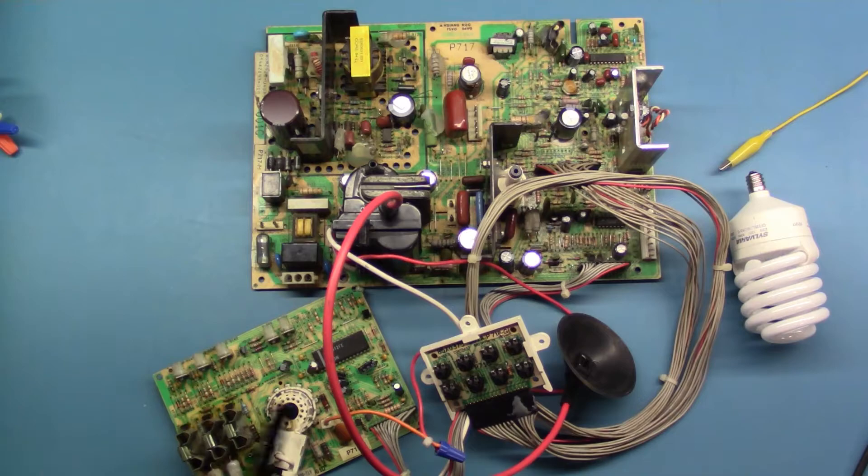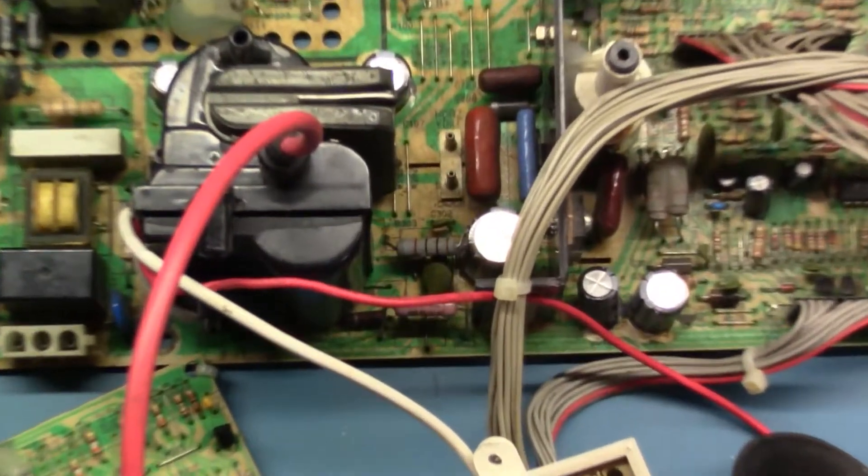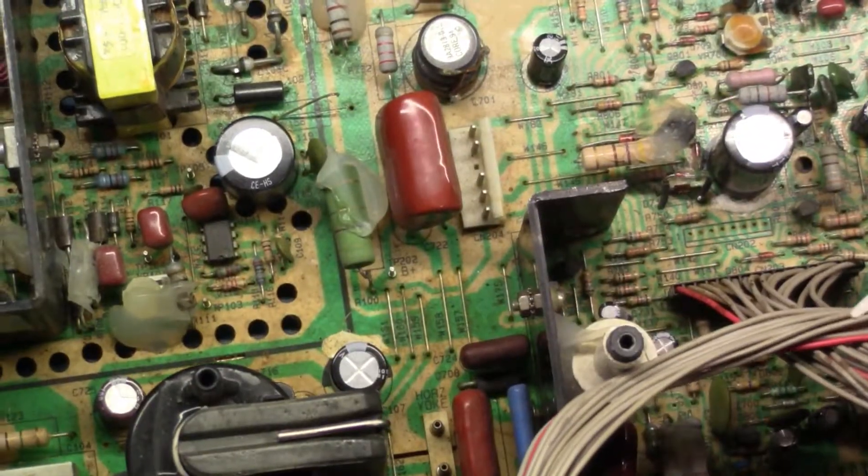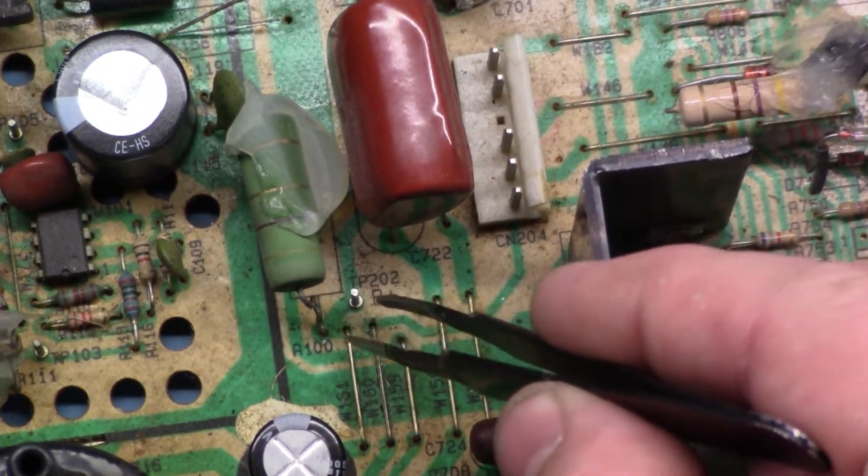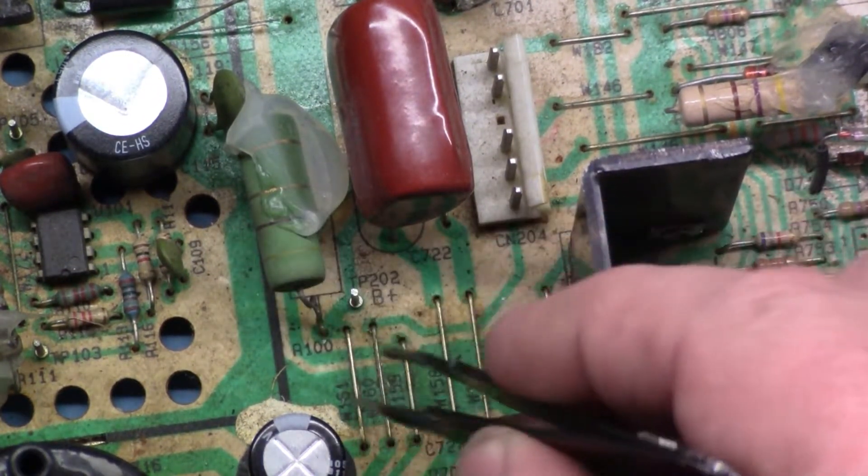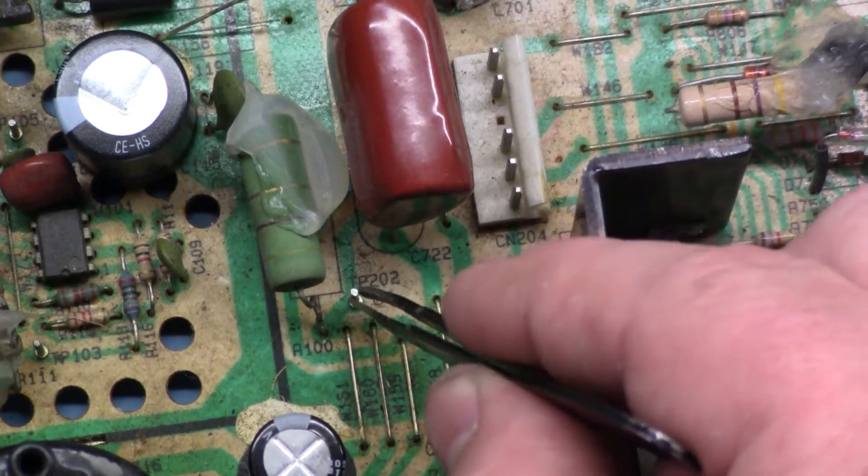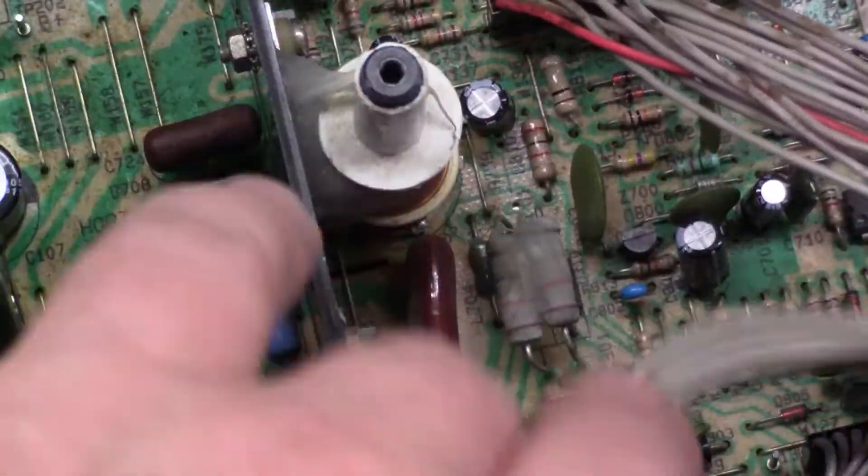Now as far as B+ goes, it's a bit different from the 7400 and 7500. It's still the same test point, test point 202, but on the U2000 it's right here by R100. Your TP202 by R100, this is where you test your B+. On the 7400 and 7500 it was over here by this capacitor, so it's a different location on these chassis.